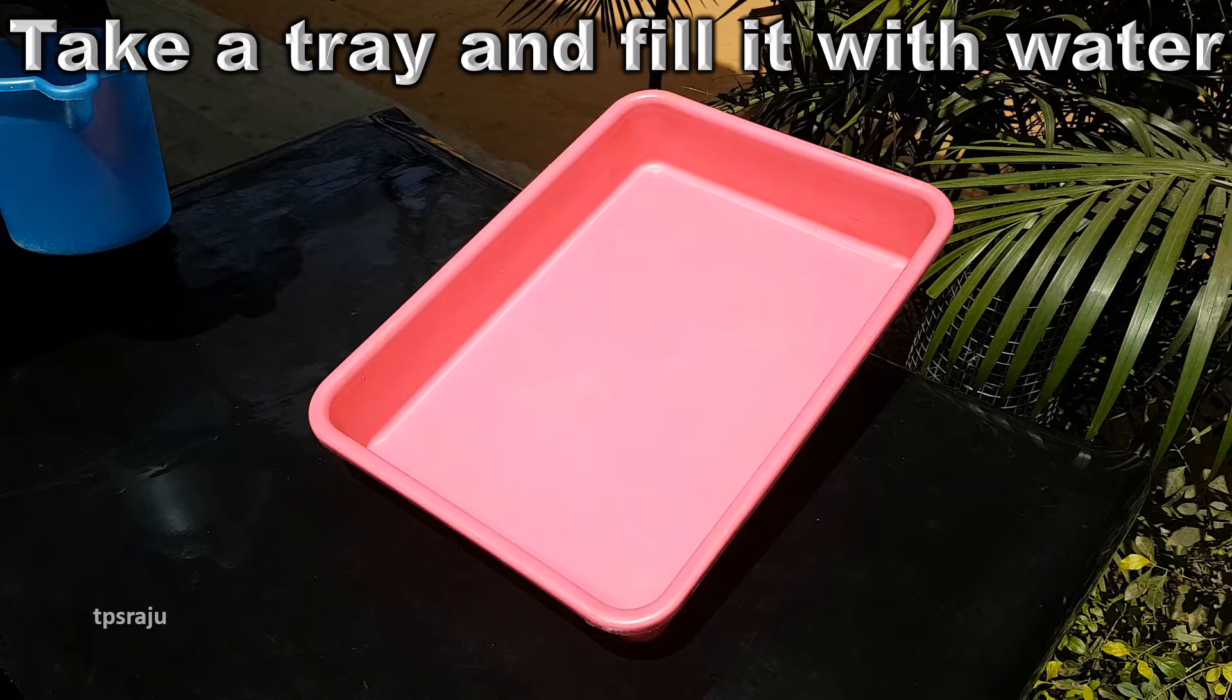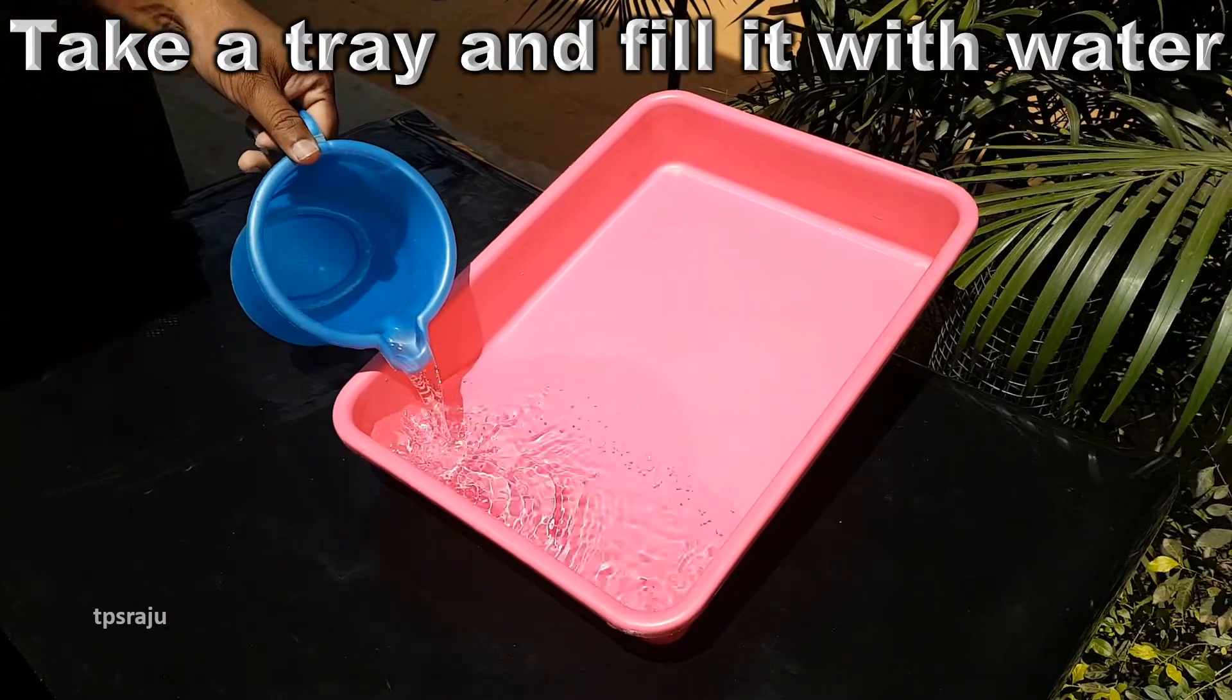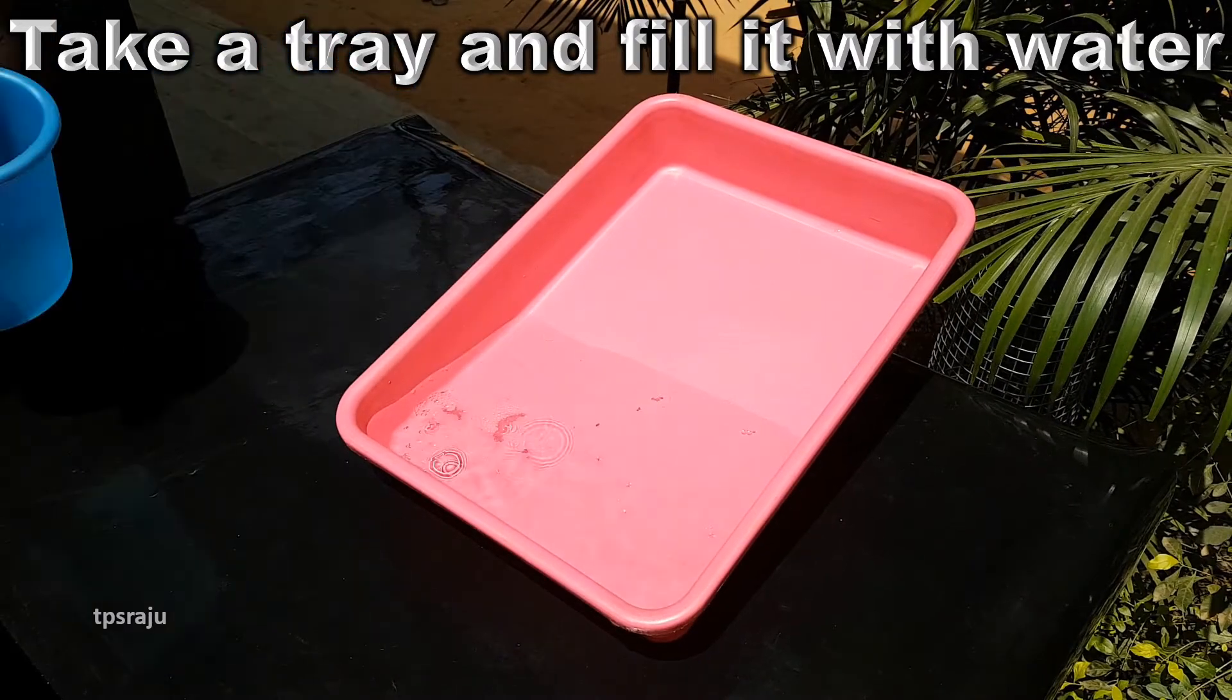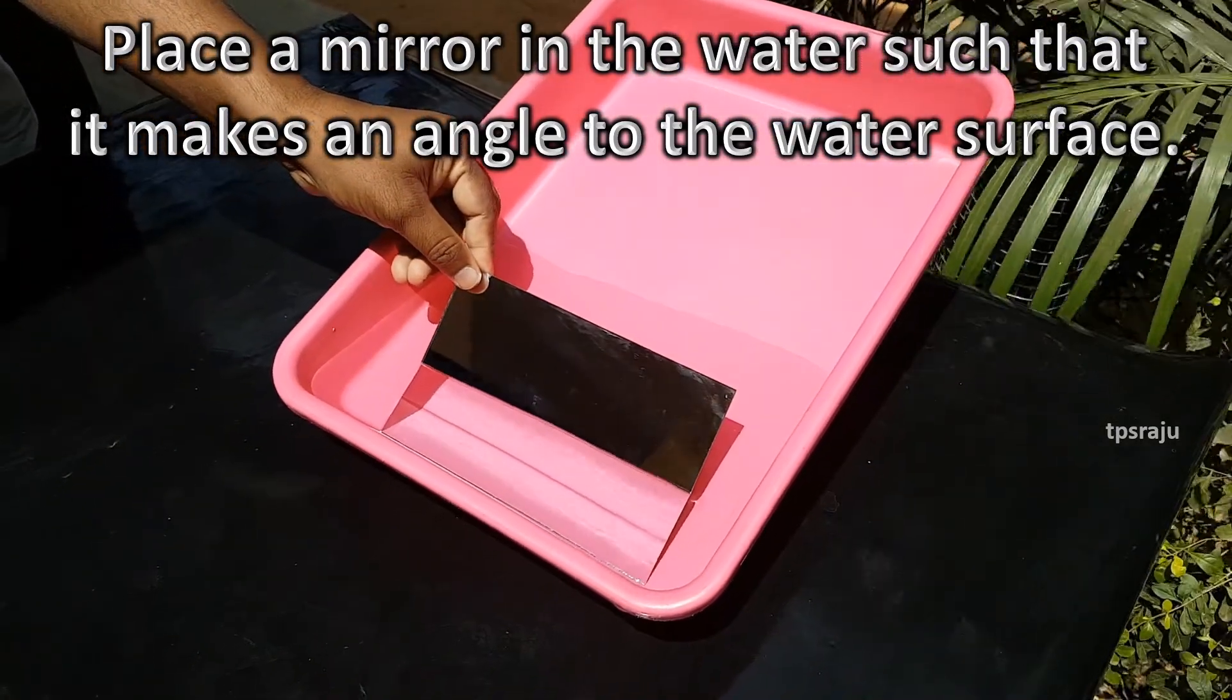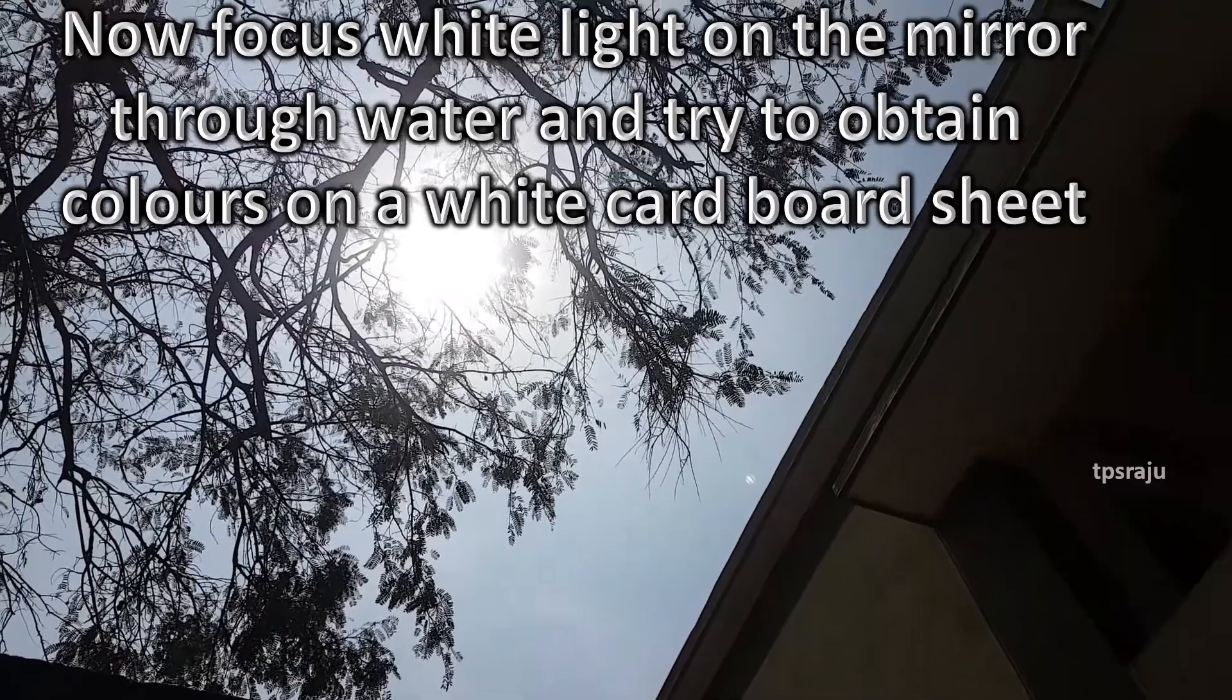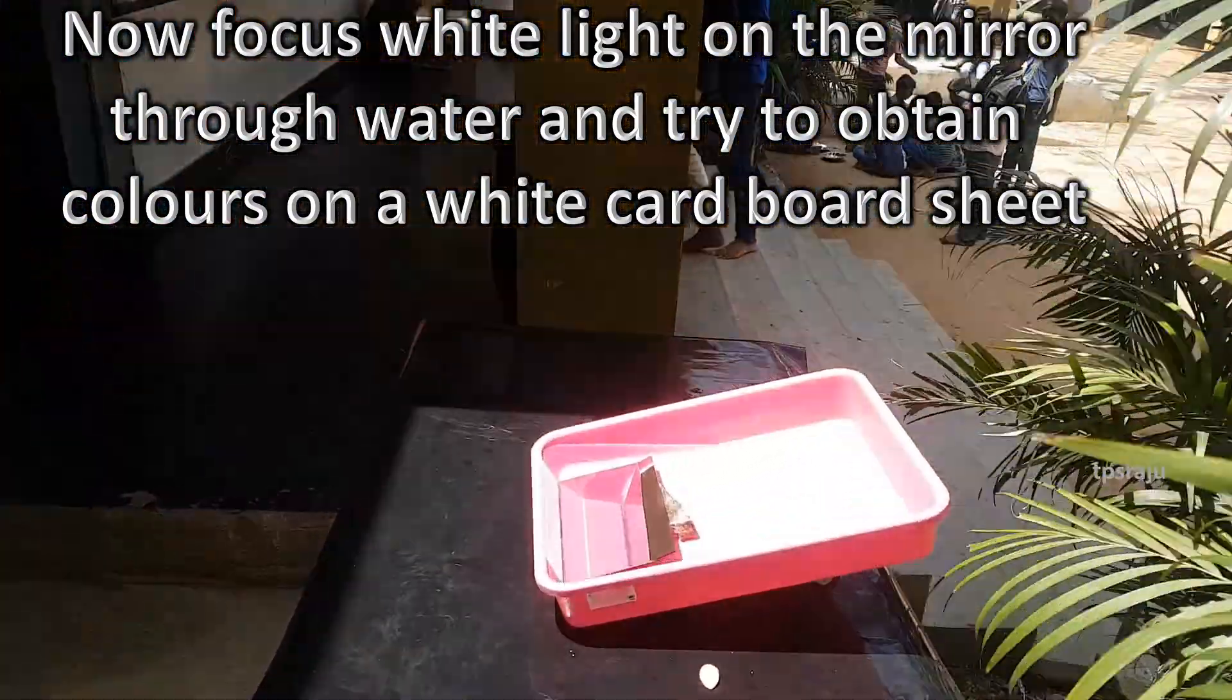Now, we are going to do an activity to observe dispersion of light in classroom. Take a tray and fill it with water. Place a mirror in water such that it makes an angle to the water surface. Now, focus white light on the mirror through water and try to obtain colors on a white cardboard sheet.